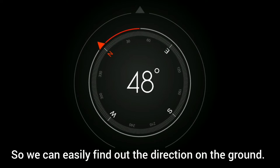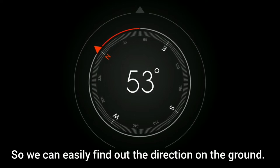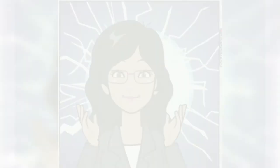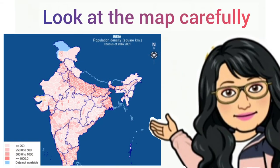But how can we find them on a map? If you look at the map carefully, you will notice an arrow marked with the letter N at the upper right-hand corner. This arrow shows the north direction.